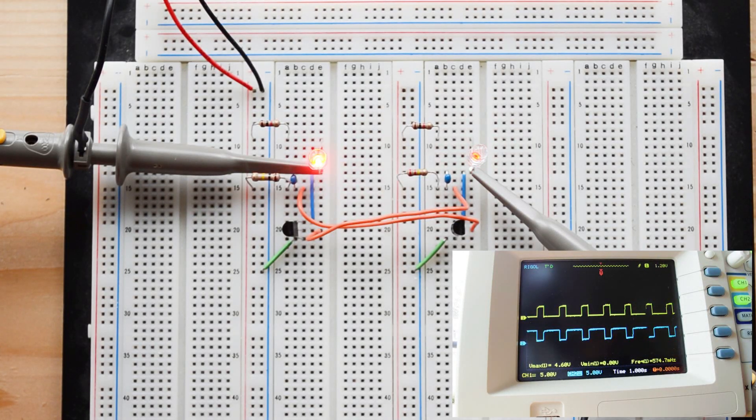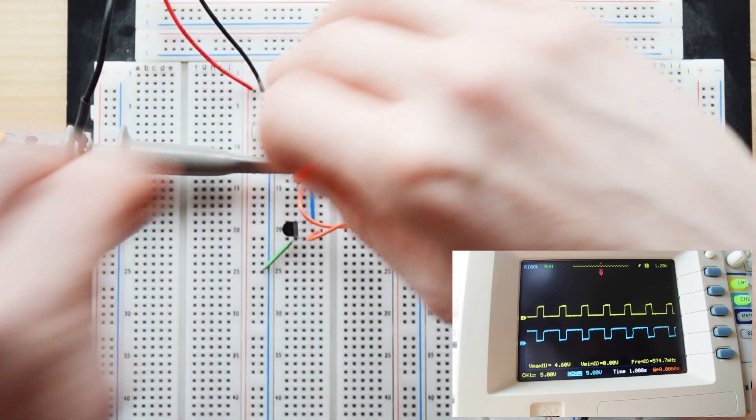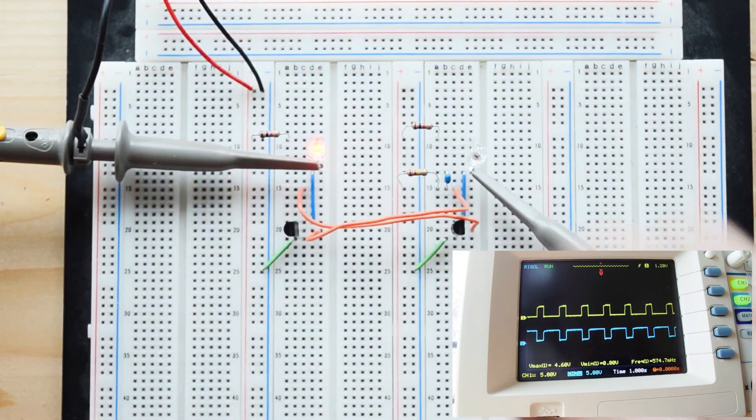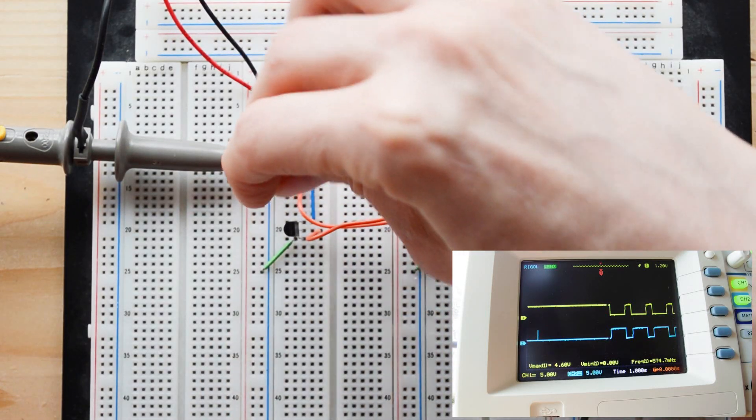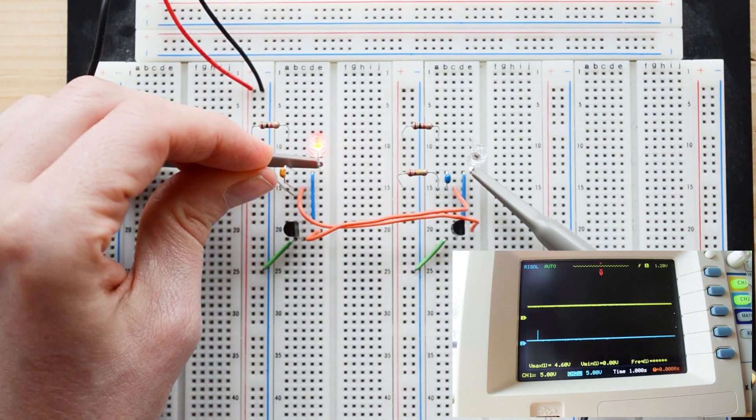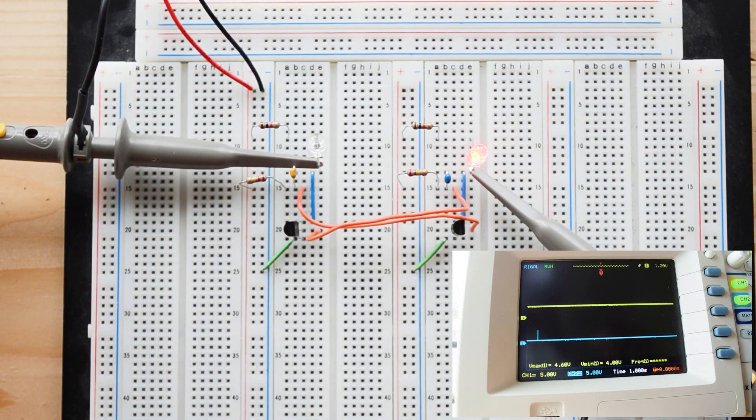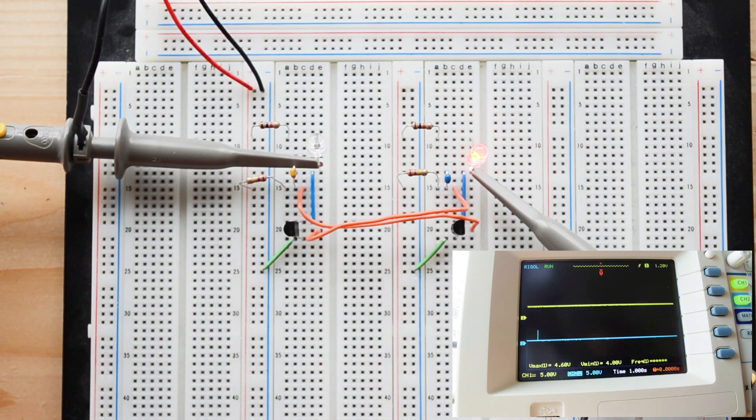And we can even show this in a more extreme fashion if we wanted to by trading out that capacitor. So I'm going to take and reinsert the capacitor we had in before, the 0.1 microfarad. And then I'm going to reinsert the 220K just so it doesn't get too fast. And you might see just a small little blink there.